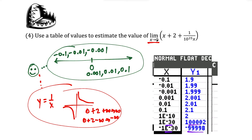The big idea for this video: a table of values is only good for estimating limits. The most reliable method for finding limits is through analysis.